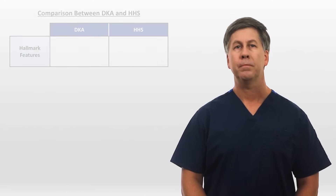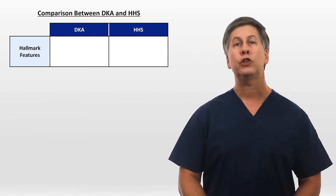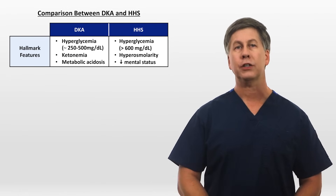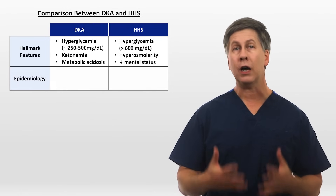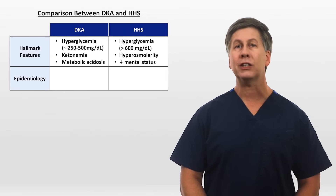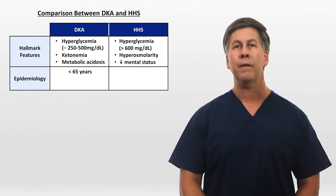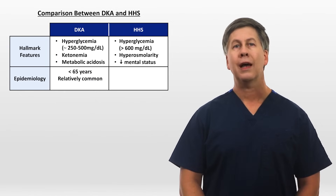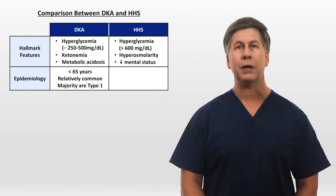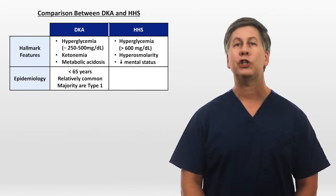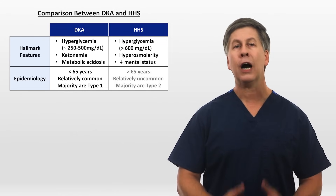Because DKA and HHS are sometimes confused for one another, I'll continue the comparisons for another minute. The degree of hyperglycemia in DKA is usually lower than in HHS. Looking at the epidemiology, DKA is typically seen under the age of 65, is relatively common, and most patients have type 1 diabetes, though a significant minority have type 2. HHS, on the other hand, is the opposite of these.